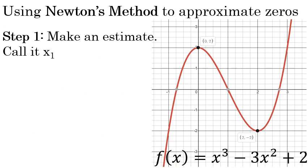When using Newton's method to approximate a zero of a function, the first step is to make an estimate of the value of the zero. Here, I will be approximating the zero that is between x equals two and x equals three. I'll approximate this zero to be 2.8 and call it x1.